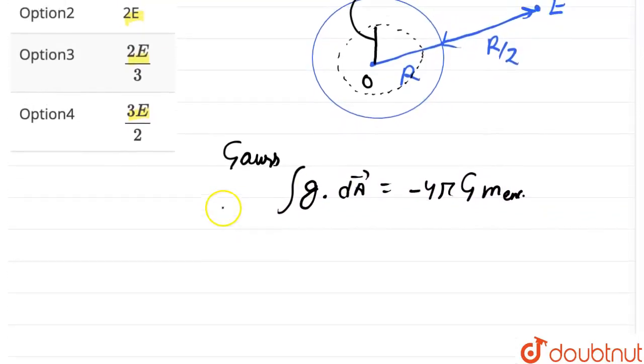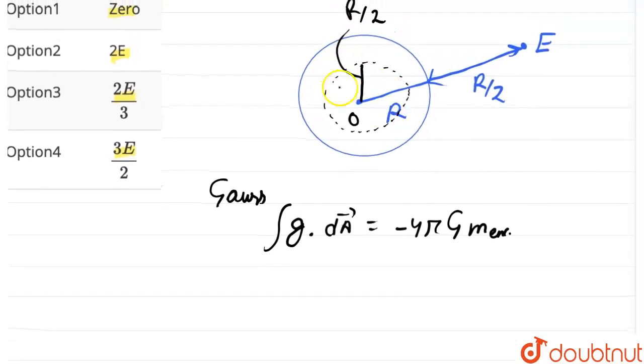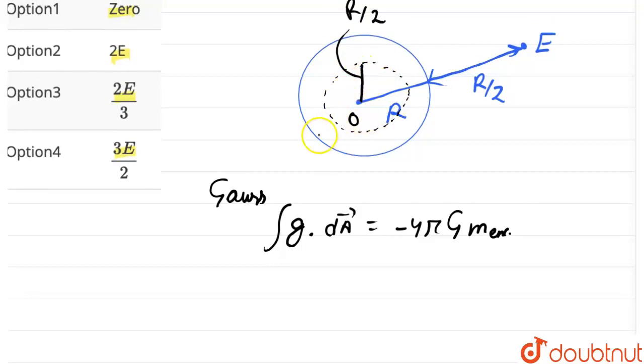Now, in this case, as the shell is hollow, so inside there is no mass. So the mass enclosed by the Gaussian surface would be 0. So, m enclosed would be 0.